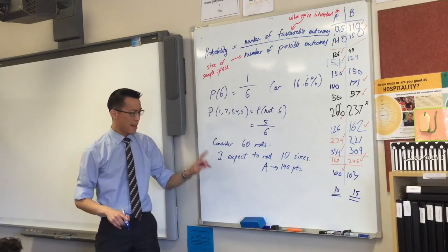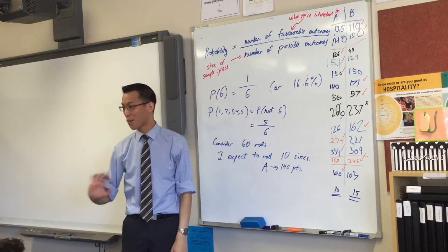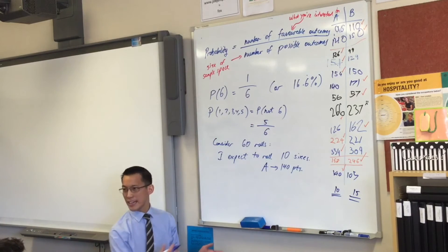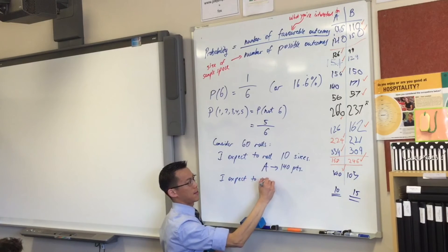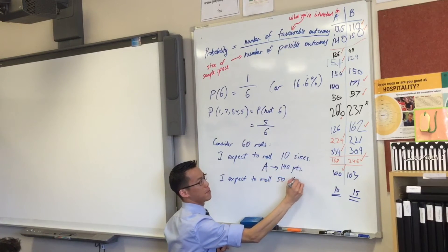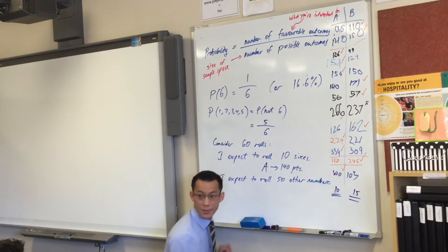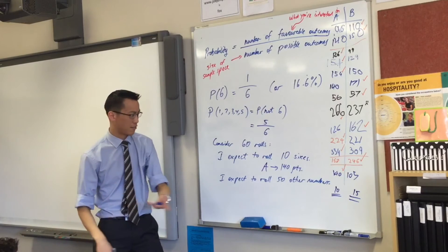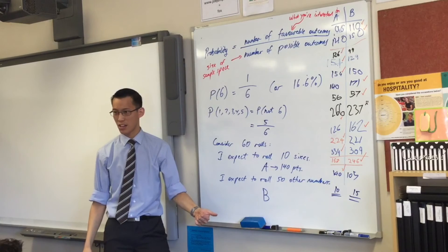But hold on a second. If A's got ten sixes, that means every single other roll was a not six. Do you agree with that? Yes. So, how many is that? 50. I expect to roll 50 other numbers. Right? This is just an expectation. This is just my prediction, right?